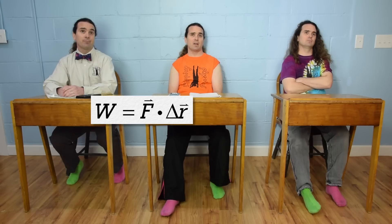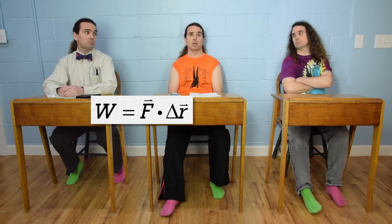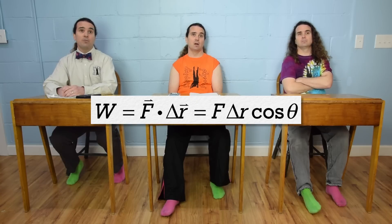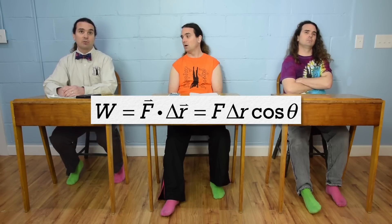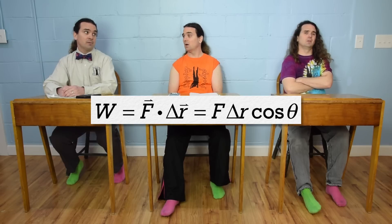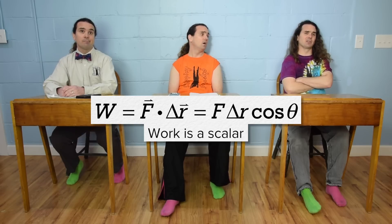Work done by a constant force equals the dot product of the force doing the work and the displacement of the object. Or force times displacement times the cosine of the angle between the force and the displacement, using only the magnitudes of the force and displacement vectors. That's what the dot product means. Work is a scalar.